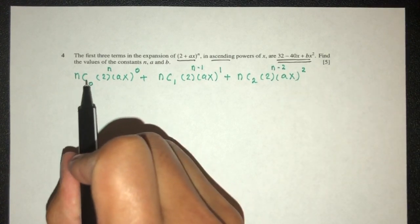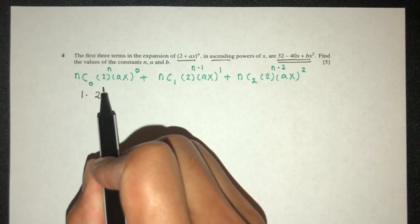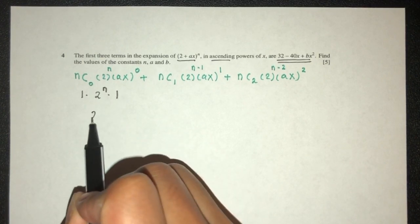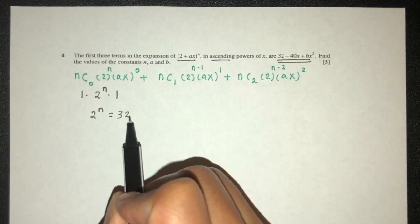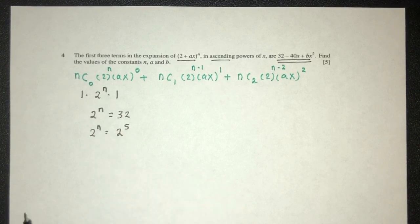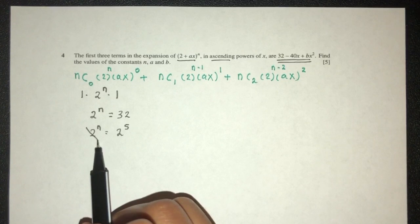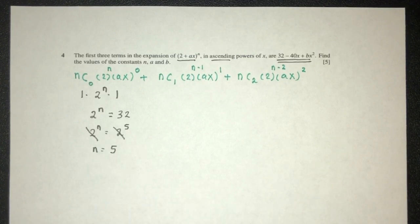Now, this will be n choose 0, anything choose 0, that should be 1, and this will be 2 power n. This is 2 power n, but now we know 2 power n is equal to 32, but 32 is equal to 2 power 5. So because they have the same base, n should be the value of 5. That's the first good thing we found in this expansion.